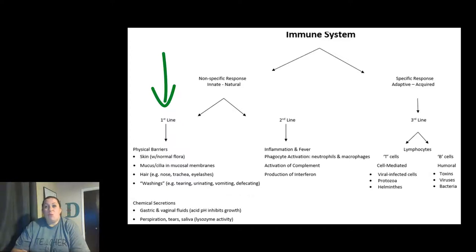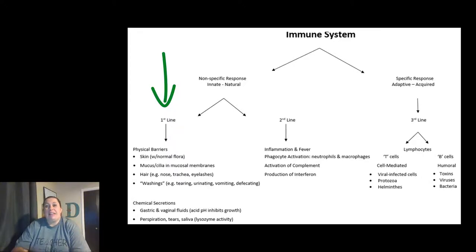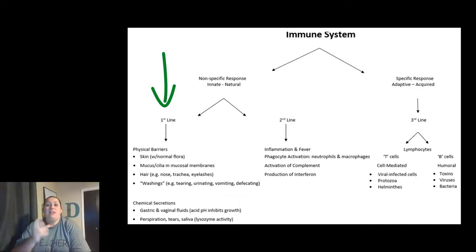There is also washing that can take place — any kind of fluid that's going to dilute invaders and help wash them away — including tears, urination, defecation, and even vomiting serves a purpose here. There are also chemical secretions that play a role in this first line of defense, like gastric juice in your stomach which is very acidic, so bacteria and other invaders don't really thrive there. The vagina has the same kind of thing with its more acidic pH, making it hostile to potential foreign invaders.